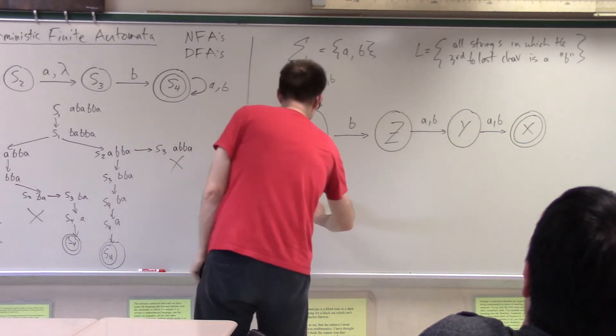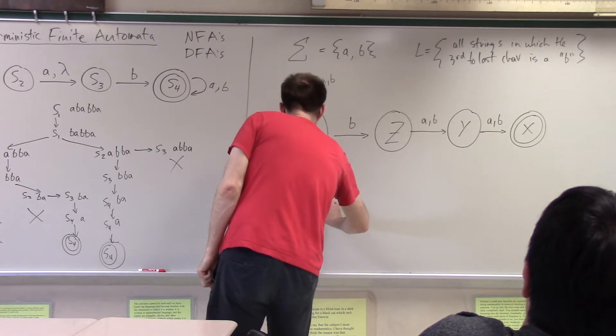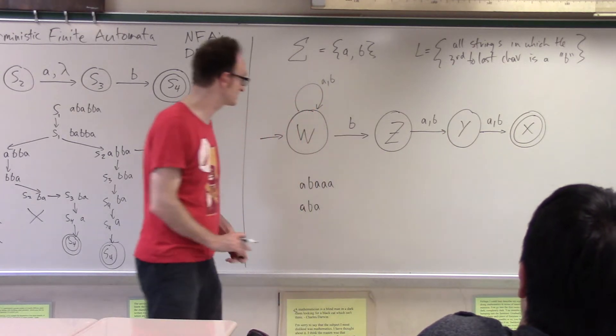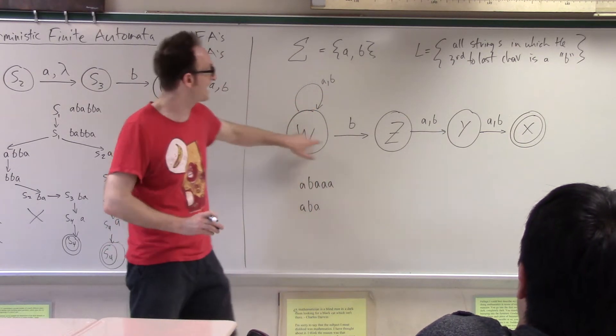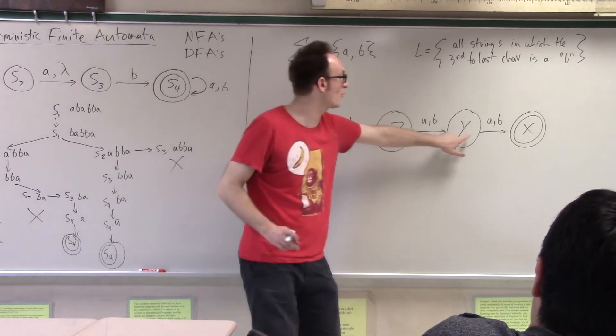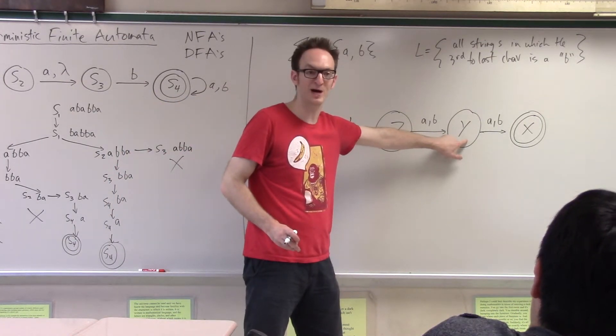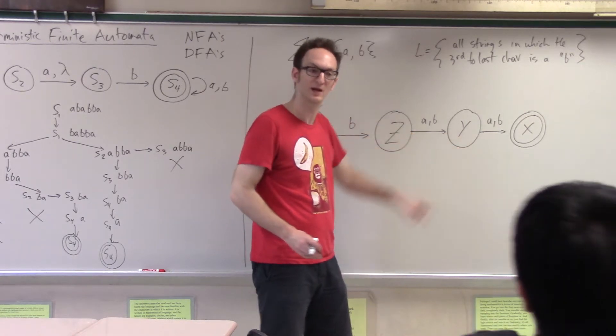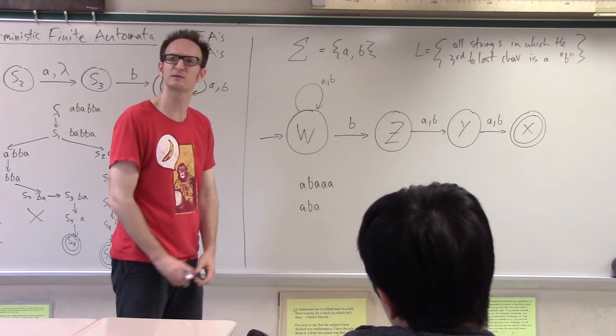And then if your character, if, what if you have A, B, A, so that B is also not your third to last character? Well, we'll guess that it is, and then I'll transition to Y, but then in Y I'll finish processing, so I'll die before I get there, right? Yeah. And then, okay, that thing, that pretty much covers it all, right? Woo!